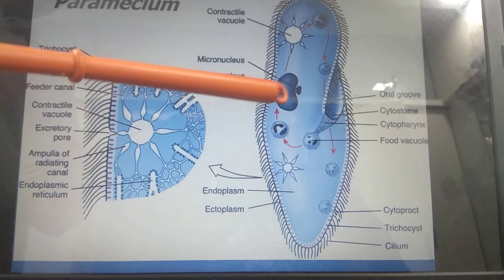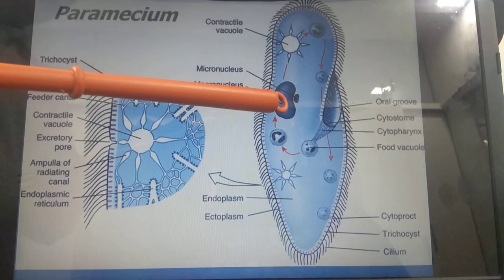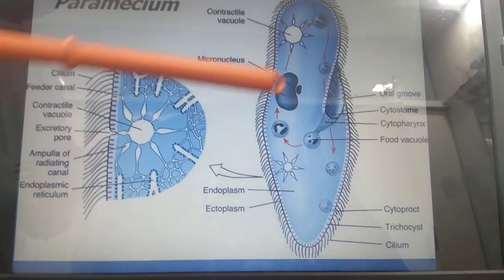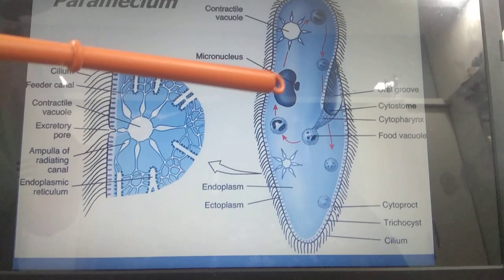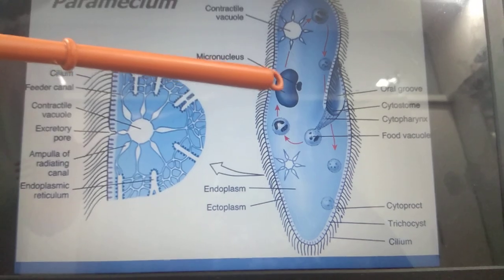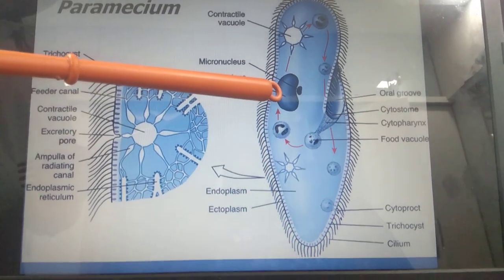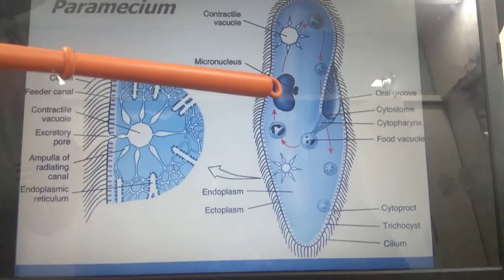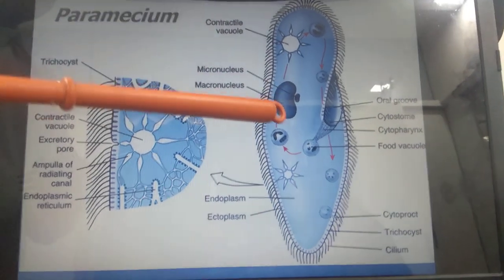There are two nuclei present in the paramecium. The large kidney-shaped nucleus is called the mega nucleus or macronucleus. This macronucleus controls the vegetative activities like digestion and excretion.